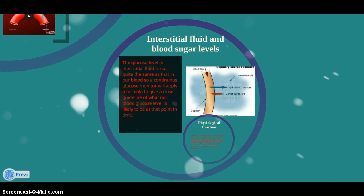Interstitial fluid and blood sugar levels: The glucose levels in interstitial fluid are not quite the same as that in our blood. So a continuous glucose monitor will apply a formula to give a close guideline of what our blood glucose level is likely to be at that point in time.